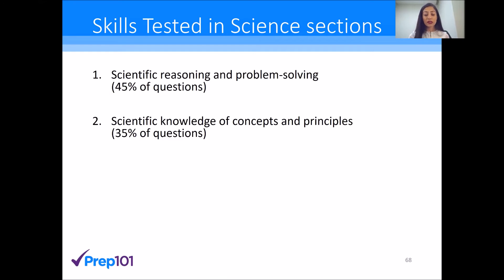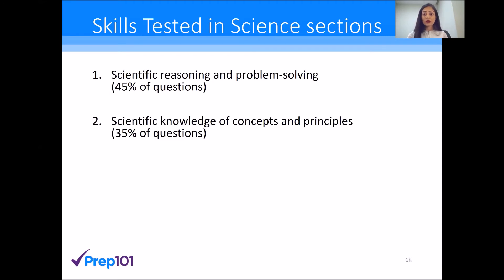They may give you a bunch of opposing theories and you have to say, based on my knowledge, I know that this one is correct. You may be asked to identify relationships between closely related concepts, or representations of a concept. Furthermore, you may be asked to identify examples of true observations based on your knowledge, or even use mathematical equations to solve problems correctly. So 35% of the exam is this knowledge section of the MCAT.